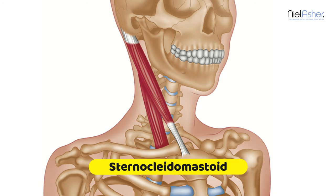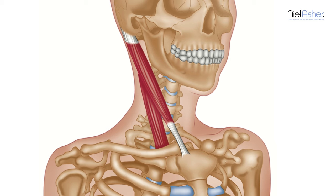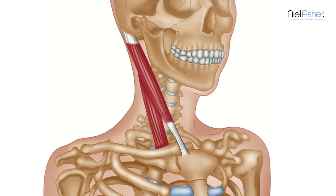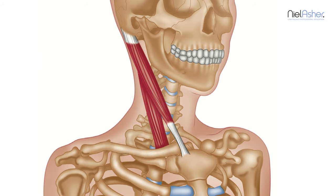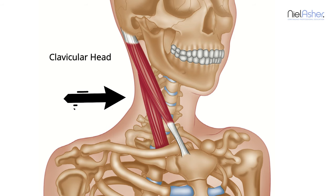We're now going to look in greater detail at the anatomy of this very interesting muscle. The muscle inserts into the mastoid bone — you can see it's a very short tendon and quite a broad insertion. Then it divides into two separate divisions. The first runs more superficially and attaches into the sternum, which is the breastbone. The second runs and attaches down into the clavicle, running underneath the sternal division.